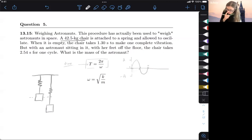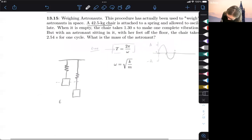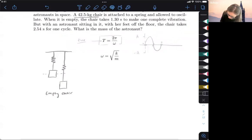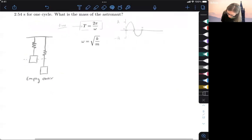back and forth, and they're just looking at the period of that oscillation, and we're going to compare the period for both of them. So this is the empty chair, and then we're going to do the astronaut.